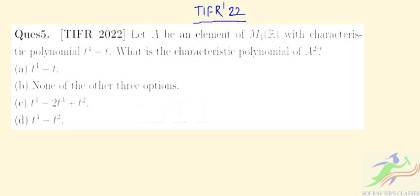Let A be an element of M₁ in the real space with characteristic polynomial t⁴ - t. We have to find what is the characteristic polynomial of A², A square.